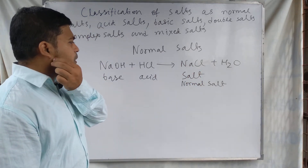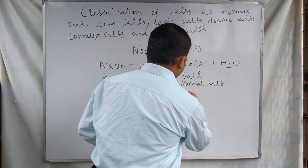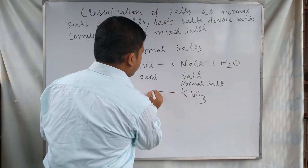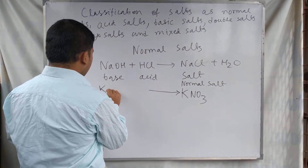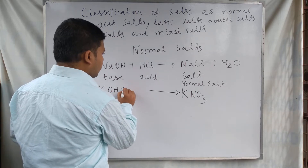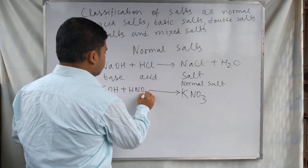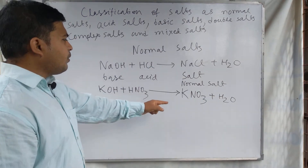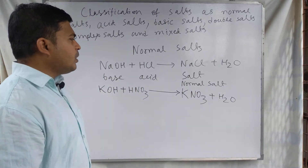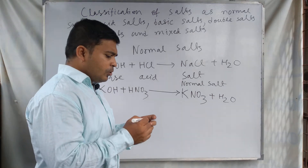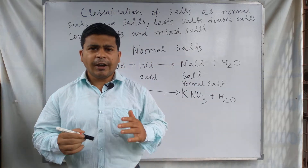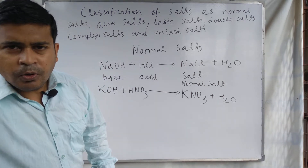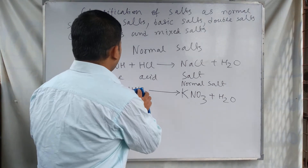Other examples of normal salts are potassium nitrate, KNO3. Potassium nitrate is formed from the reaction of potassium hydroxide and nitric acid, and so potassium nitrate is called a normal salt. Normal salts do not have any replaceable hydrogen atom in their molecule. These are examples of some normal salts.